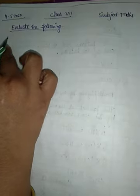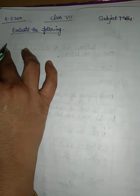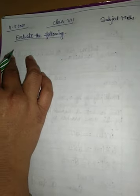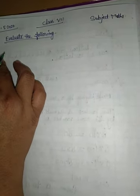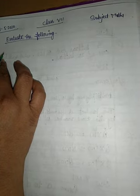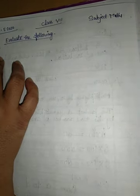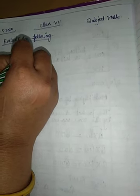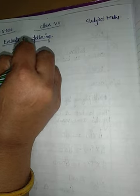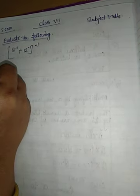Hey students, yesterday I told you about evaluating expressions from the chapter of exponents and powers. Today I am also going to tell you about evaluating the following. First we have to take an example like this. Suppose we have (8⁻¹ + 12⁻¹)⁻¹. How can we solve it?